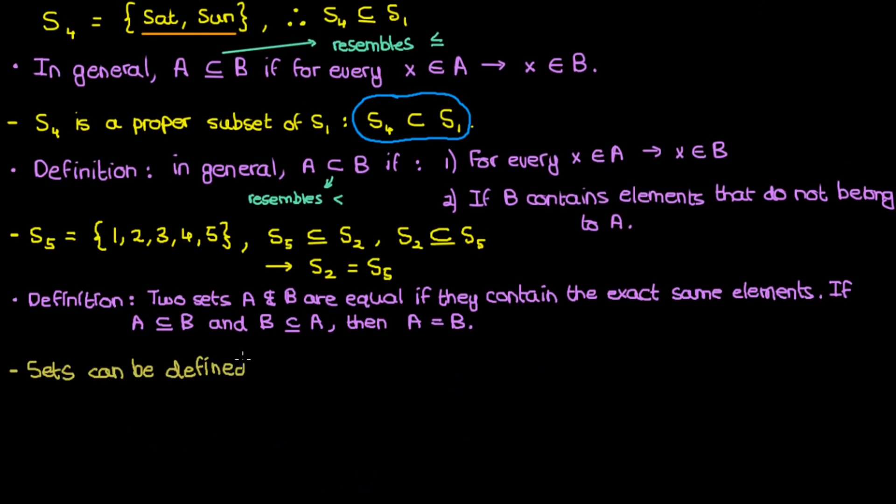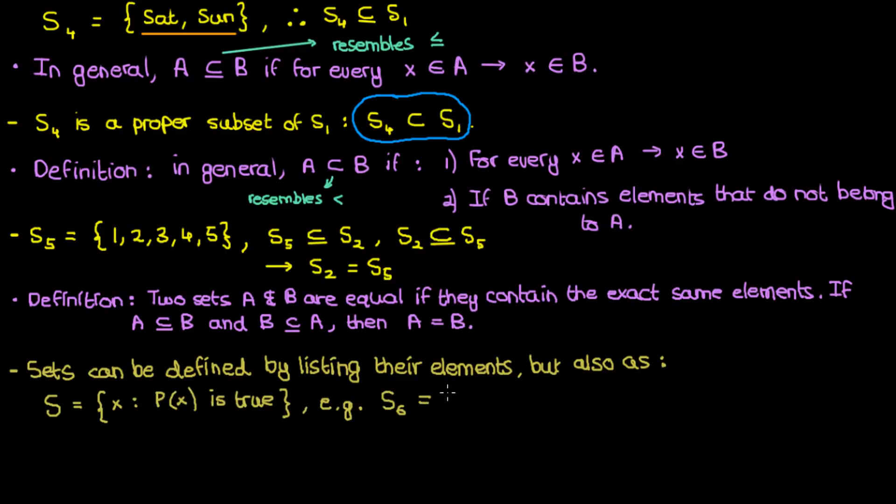So so far we've defined sets by listing all their elements, but just as an aside we can also define them by using a mathematical statement. For instance the set S consists of all elements X such that a statement P is true. For example we could say that the set S6 consists of all X such that X is a natural number and X is greater than 2.